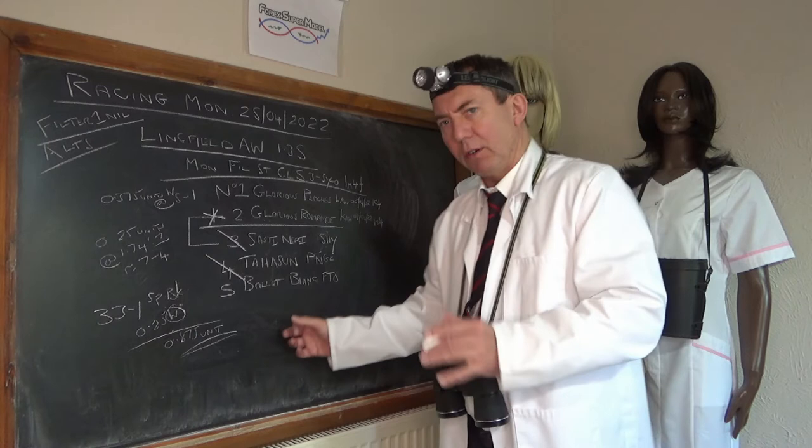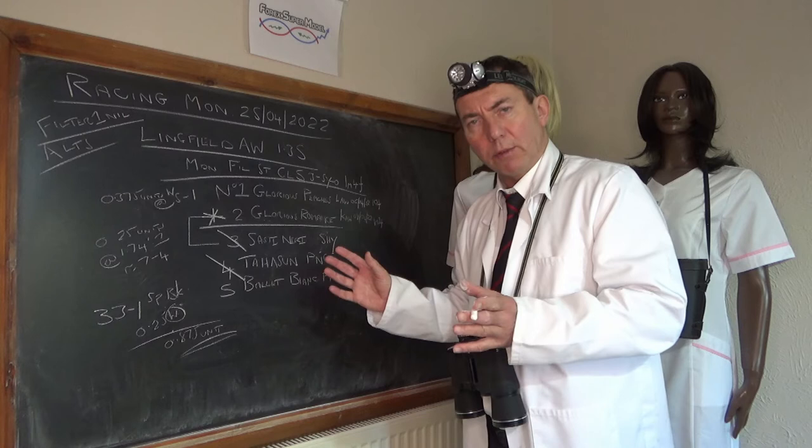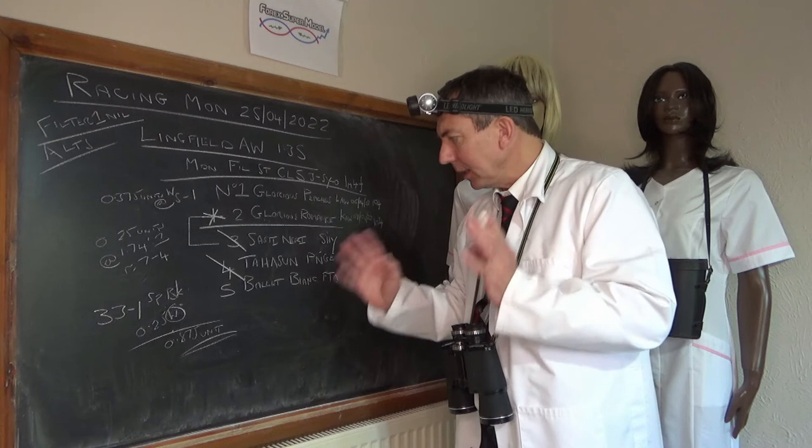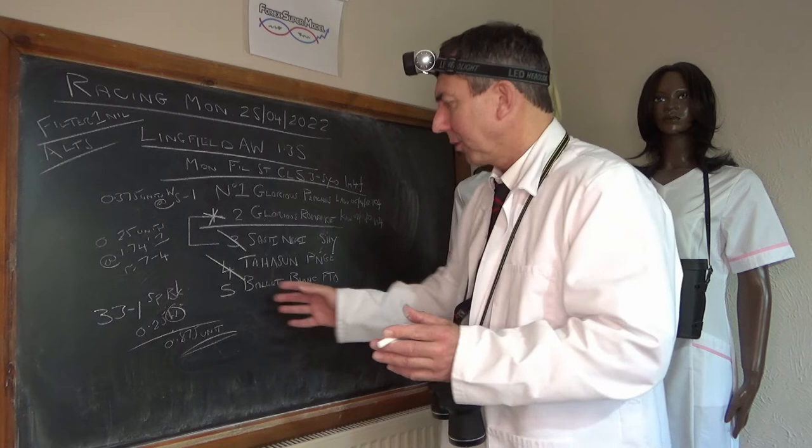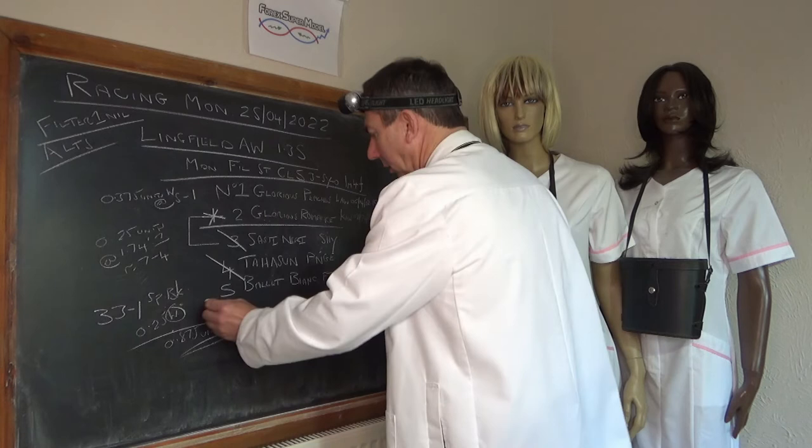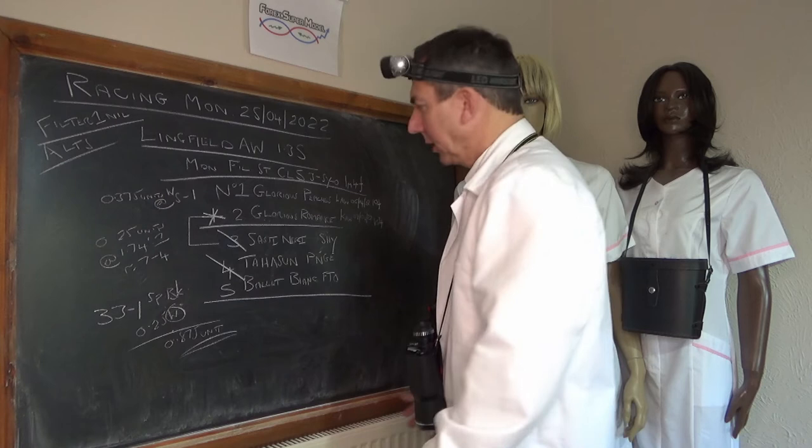Number five, this Ballet Bianc is an FTO, first time out. Breeding suggests it has a chance, it's got a three pound claimer on it. There's only five in the race, so it's a bit of a wild card on that one. We were thinking of leaving it out but then we thought no, it doesn't really reflect our analysis. It's an unknown and we've got 33 to 1 on Sportsbox so we've got a quarter of a unit on at 33 to 1 on this unknown. We don't have any information, we don't have any contacts at the stable or anything.